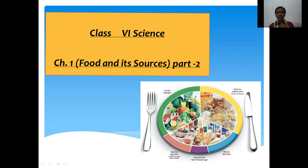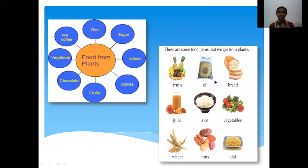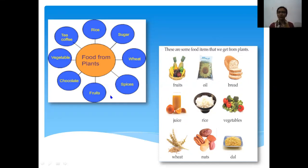Plant and animal products are known as food. Revising food from plants: the oil we get from the seeds of different plants — for example, mustard oil, and sunflower seeds are used for extracting oil. Bread is also a plant product, made from wheat. Rice comes from the rice plant, and nuts are also part of seeds. Juice is obtained from fruits. Spices, coffee seeds, vegetables, and fruits are also plant products.